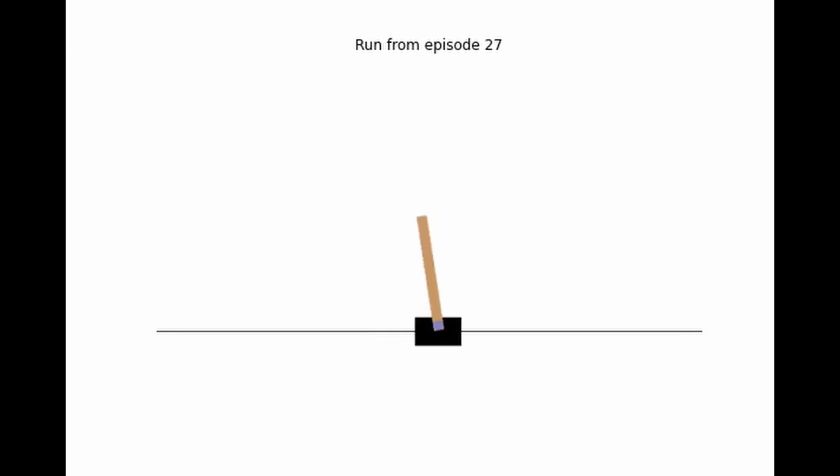In this case, the reinforcement learning algorithm is tasked with keeping a pole on top of the cart upright for as long as it can manage. This seems like a relatively straightforward problem, except for the fact that the boundaries of the variables are extremely large.